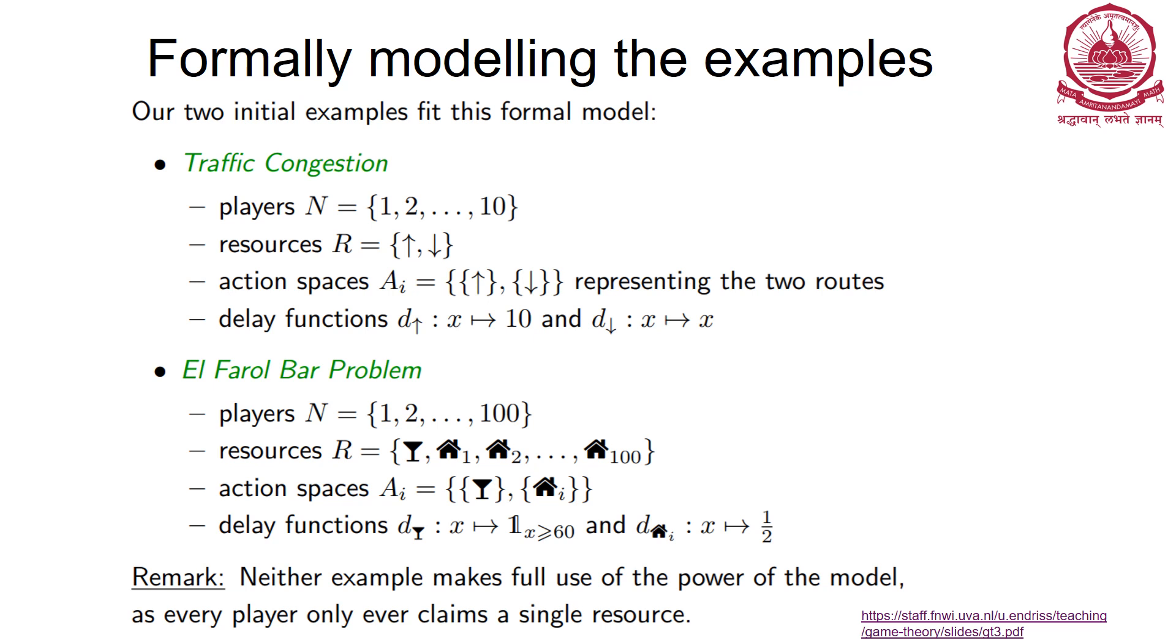Now the bar problem: there are 100 players, resources are bar and house, action spaces are either bar or own house. Notice here individual players have different sets of action spaces. Delay function: d(x) = 1 if x ≥ 60, and d of house is x implies 0.5.